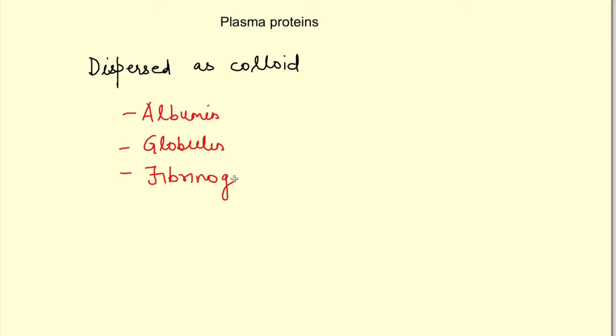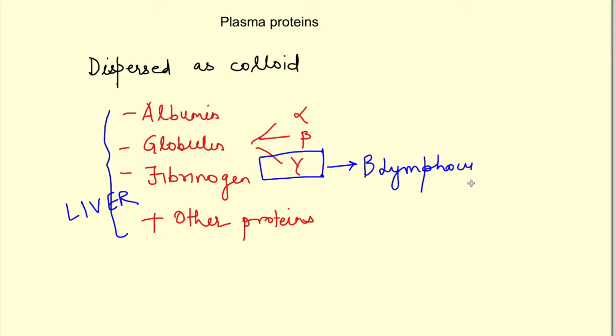Globulin is further divided into three types: alpha globulin, beta globulin, and gamma globulins. Apart from these, there are various other proteins as well. Almost all plasma proteins are synthesized in liver except gamma globulins, so you should assume plasma proteins are synthesized in liver until stated otherwise.